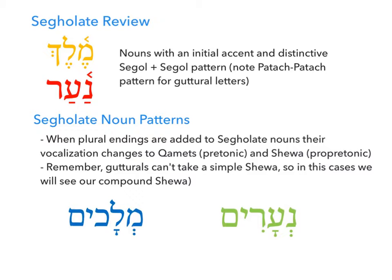Regardless of whether we have paired segols or paired patahs, when these nouns are inflected, we get consistent changes earlier in the word. Looking at the plural forms — melechim, ne'arim — in both cases we get a sheva in the pro-pre-tonic position, regardless of whether it's a segol or a patah. Following that, we also get a kametz. Both of those segolate patterns result in sheva plus kametz before we add our endings.